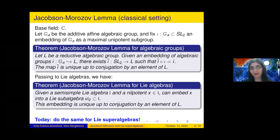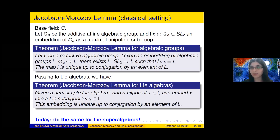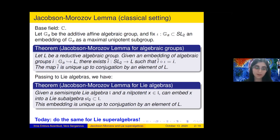On the level of Lie algebras, this tells us that if we have a semi-simple Lie algebra and a nilpotent element in it, we can embed this nilpotent element into an SL2 triple — this is the best known version of the Jacobson-Morozov lemma — and this embedding is unique up to conjugation by an element of the reductive group. What we want to do today is describe an analog of this for Lie superalgebras.